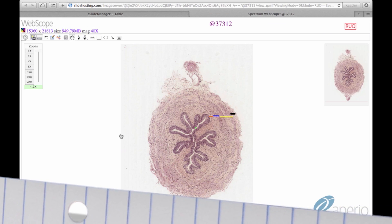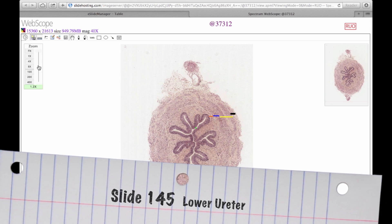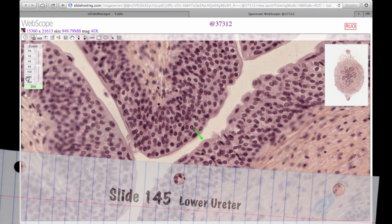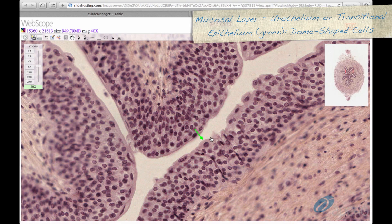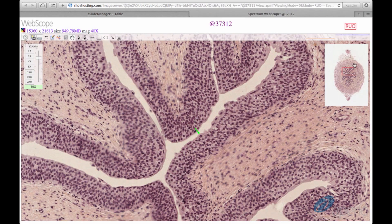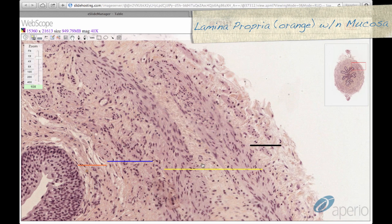Slide 145 is a section of the lower ureter stained with H&E. The mucosal layer of the ureter consists of transitional epithelium, seen here at the green arrow, which is a key identifying characteristic of urinary epithelium. Recall that urothelium consists of dome or umbrella shaped cells. Additionally, we can find the lamina propria in the mucosa, spanned by the orange line.